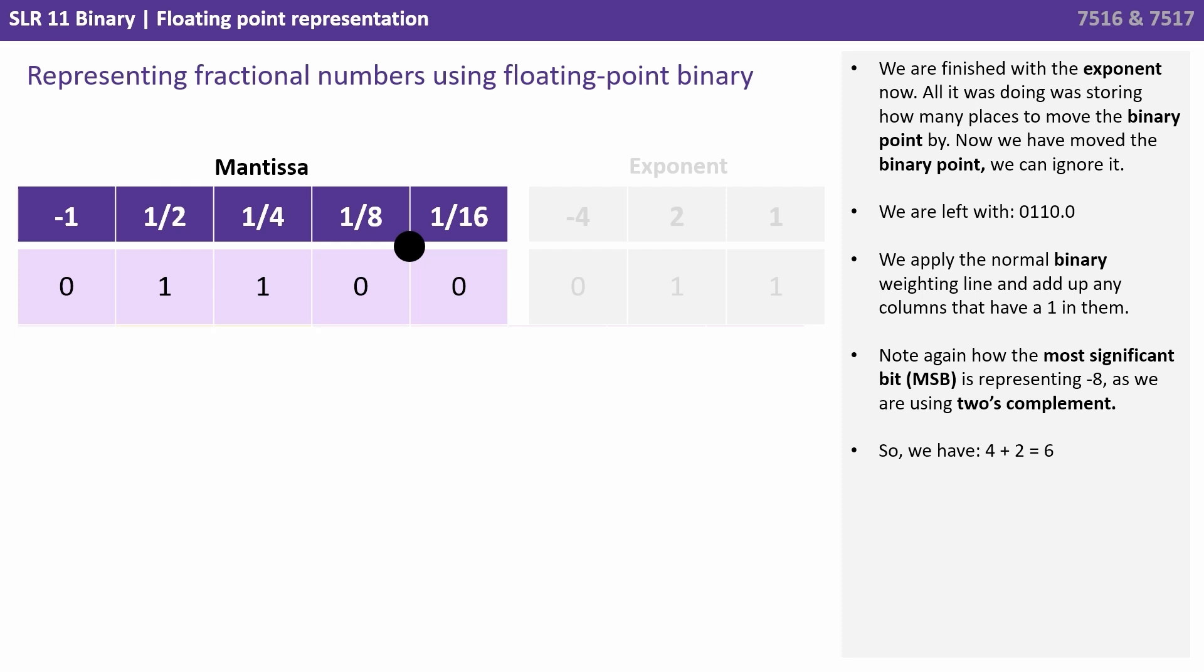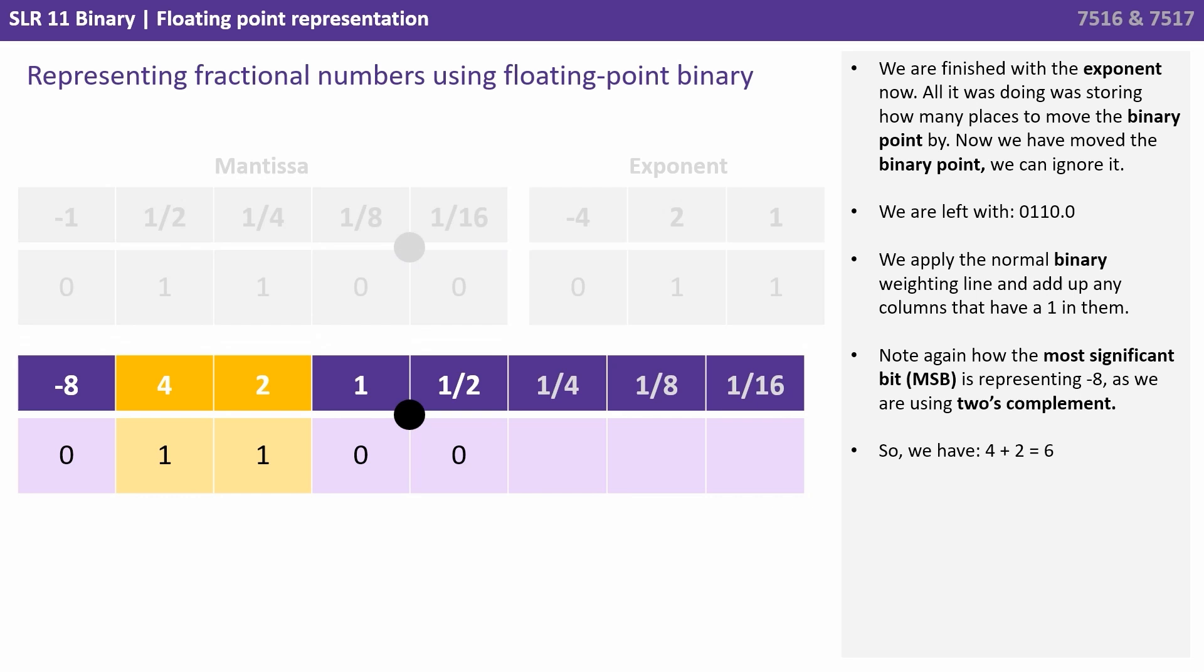Now we've moved the binary point we can and should ignore it. So we're left with 0, 1, 1, 0, 0. We apply the normal binary weighting line and add up any columns that have a 1 in them. Note again how the most significant bit is representing minus 8 as we're using 2's complement. So here we have a 4 plus a 2, so our value is 6.